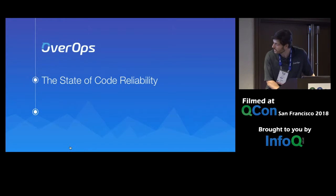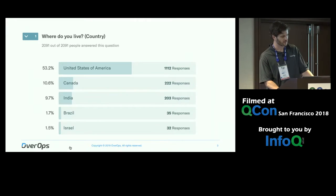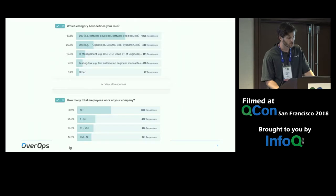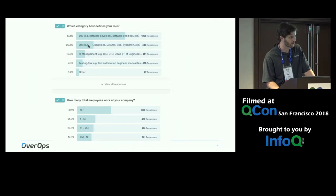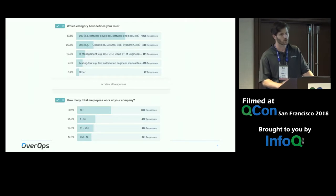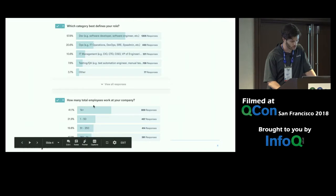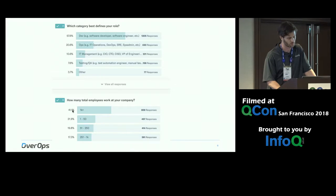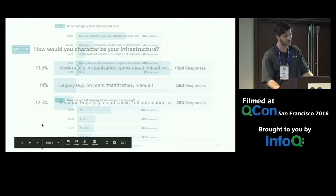With the state of code reliability — about 2,000 people responded, mostly from the US and Canada. Most of them, 60%, are developers, then ops, so it's primarily an 80% DevOps audience with less than 10% on the QA side. This aligns with the audience we have here. The bulk came from large enterprise companies that employ more than 1,000 employees.